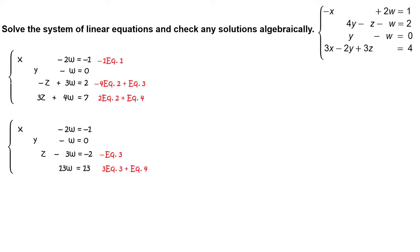Next, replace the third equation with negative 1 times equation 3, and replace the fourth equation with the sum of 3 times equation 3 and equation 4. The revised system is: x minus 2w equals negative 1, y minus w equals 0, z minus 3w equals negative 2, and 13w equals 13.